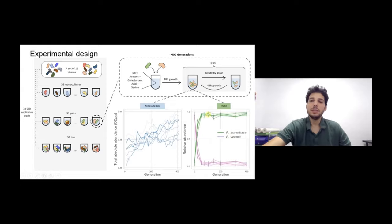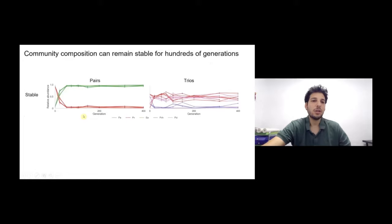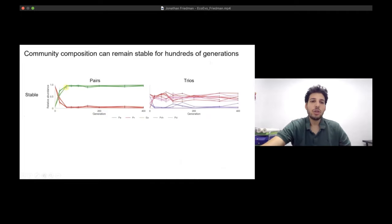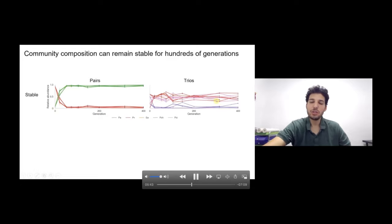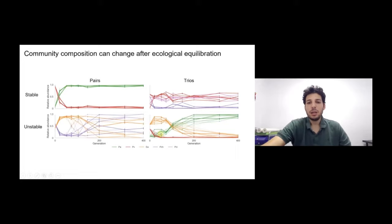Looking at examples of what composition looks like over co-evolution: here's a particular pair that starts from a randomly imposed initial condition, quickly changes to some sort of ecological equilibrium, and then stays there for the duration of the experiment. A similar thing happens for this trio — these are examples where nothing changes during co-evolution and prediction would be trivial.